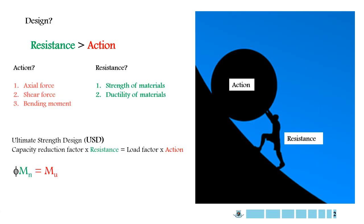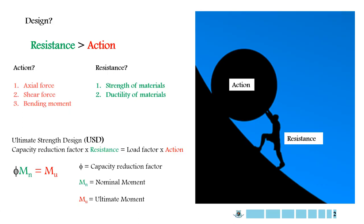I want you to remember this simple formula: Phi times MN is equal to MU. In this formula, Phi is the capacity reduction factor, MN means nominal moment, and MU means ultimate moment. Nominal moment is the capacity of the beam — in other words, it is the resistance. Nominal moment is calculated from the strength and strain of the material. On the other hand, ultimate moment is calculated from the loads on the beam, which you usually call the bending moment.